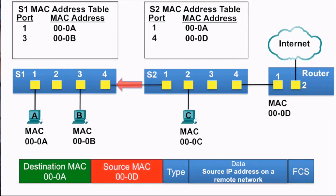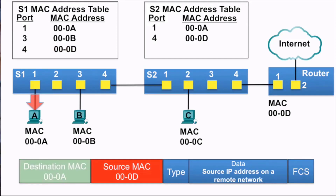S1 receives the Ethernet frame and examines the source MAC address, which is not in its MAC address table, so it adds it to its MAC address table. It then examines the destination MAC address, which is in its MAC address table, so it forwards the frame out port 1 towards PCA. PCA examines the destination MAC address and, because it matches, accepts the rest of the frame.